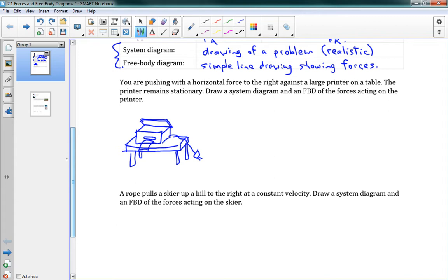And let's give that table a bit of shape here, some legs. And we'll give that printer a little power cord too, just for good measure. There's a little power cord. So there's my system diagram. And you can see that that's pretty realistic. Now I'm actually missing something. It says I'm pushing against it. I'm pushing with a horizontal force to the right. So that means I need to have some sort of hand here. I'm going to draw a little hand, maybe just like this. And there's my hand. And I'm pushing that printer now to the right. So there's my system diagram.